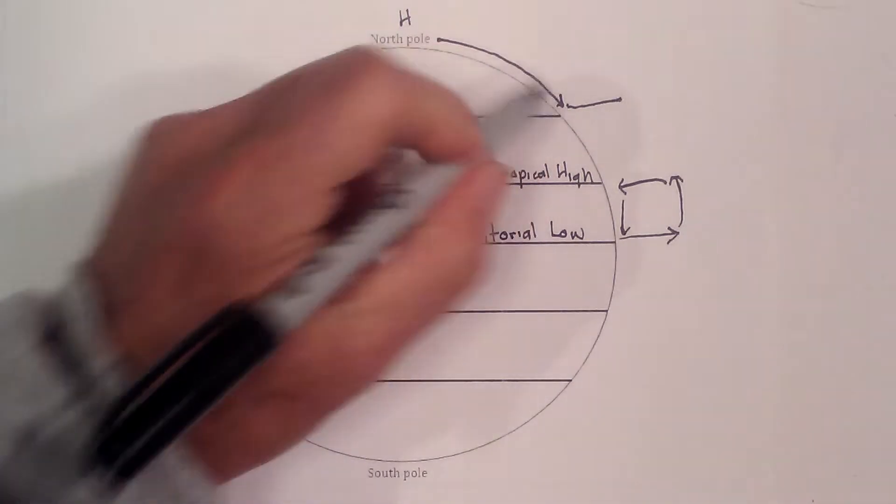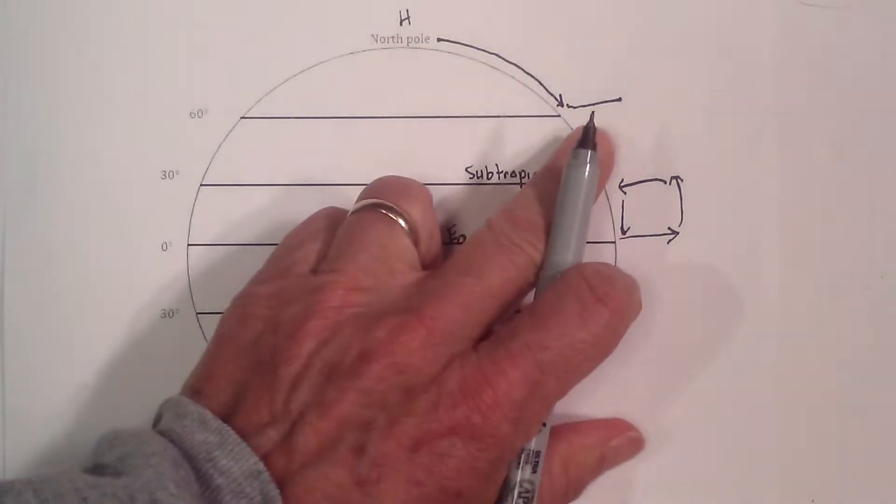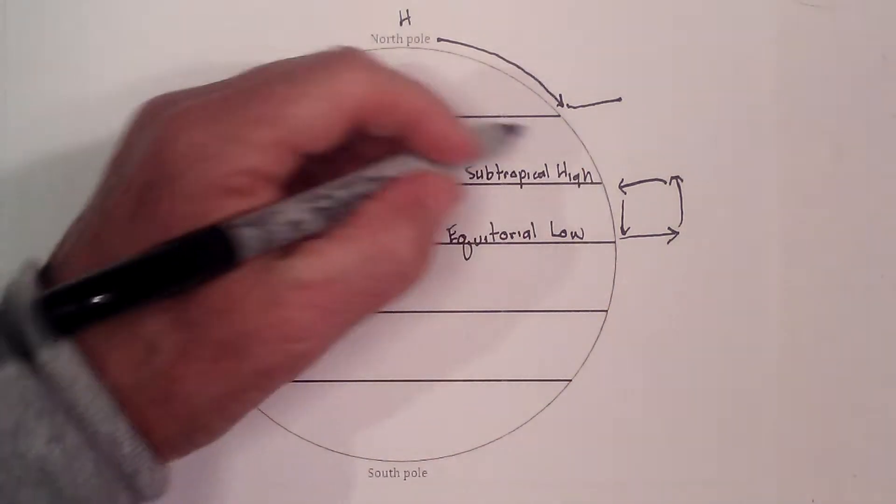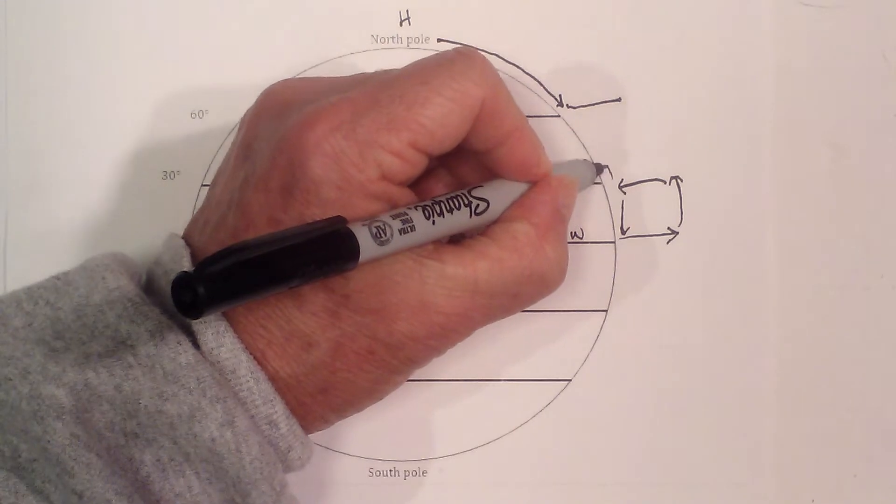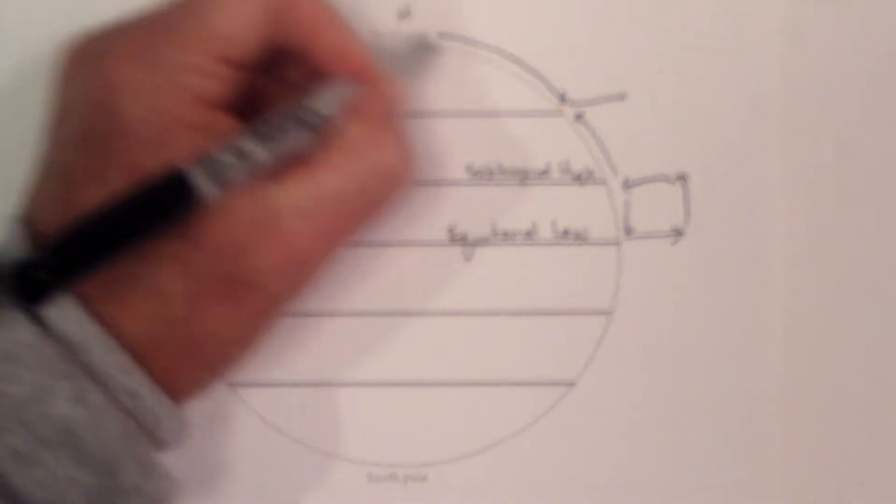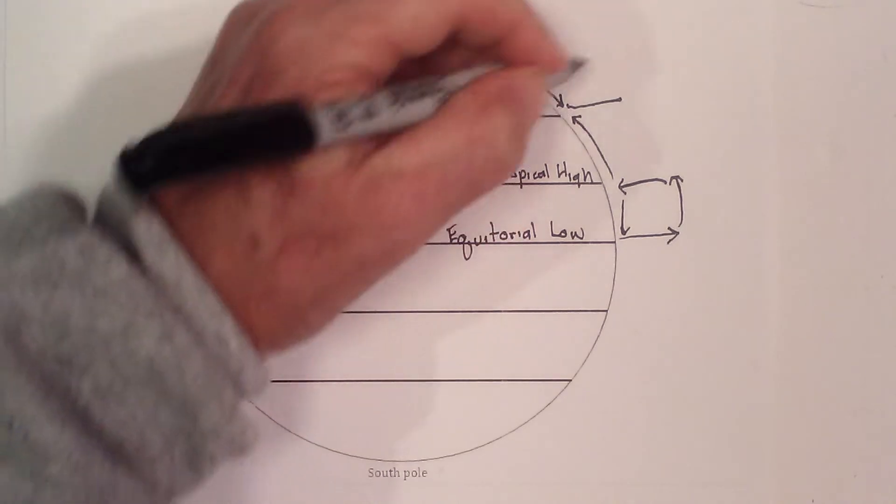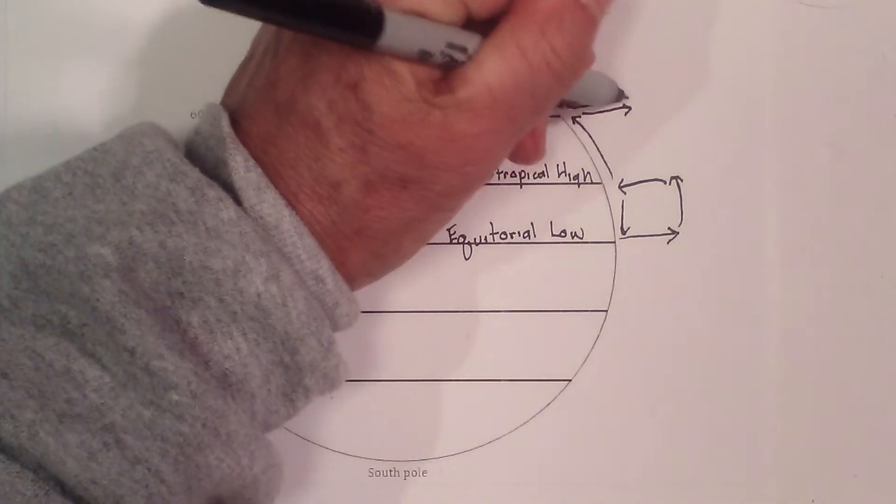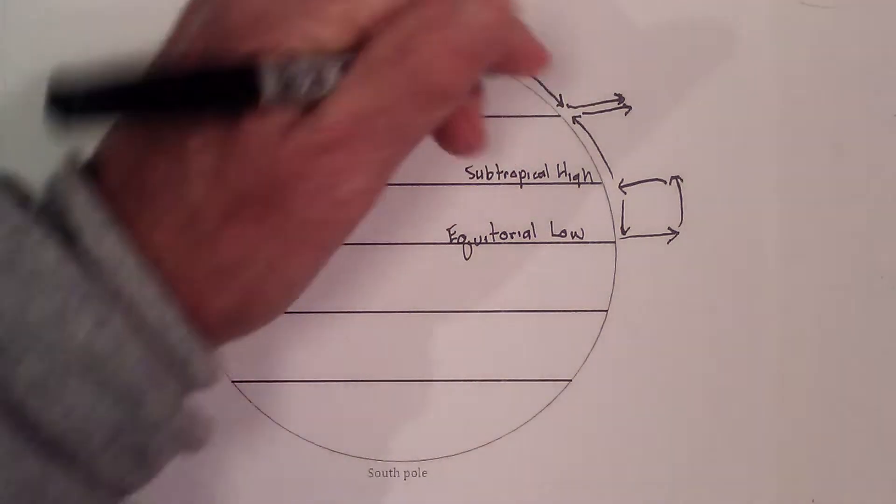But let's stop there just for a second. There's more than just convection going on here. We have this subtropical high, so this air begins to move in this direction. You have two fronts hitting here of air, and it forces the air to go somewhere, so it starts going up. It's a convergence boundary.